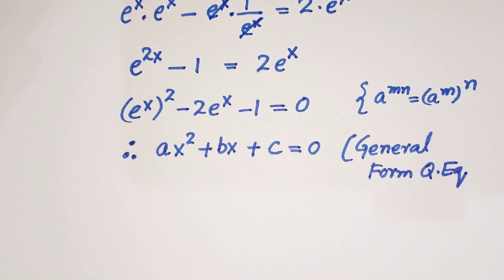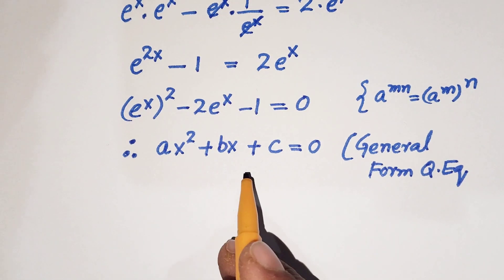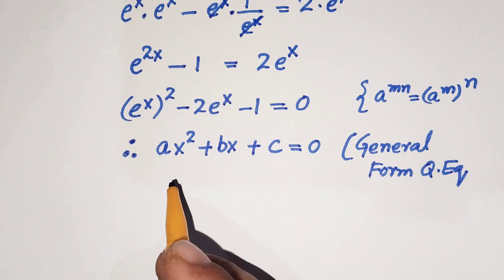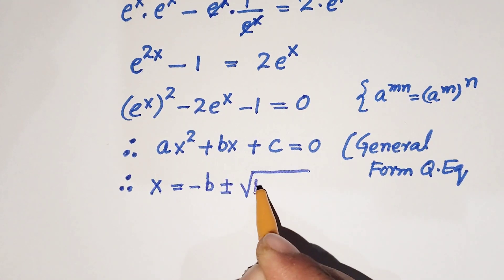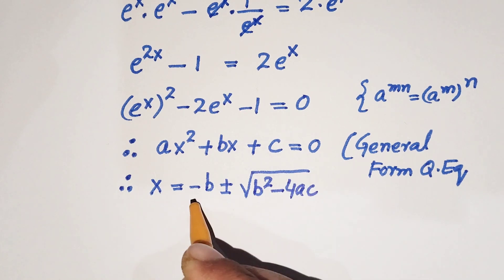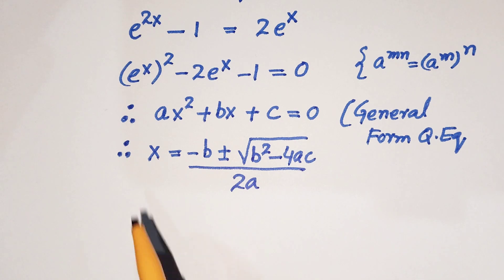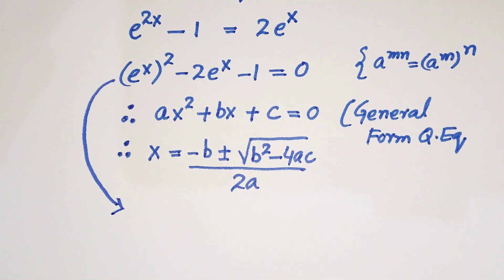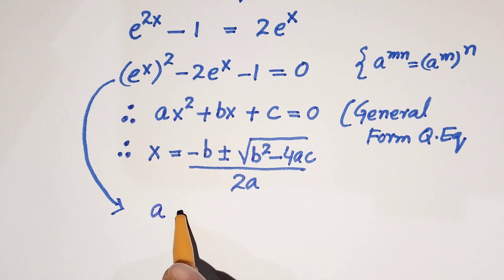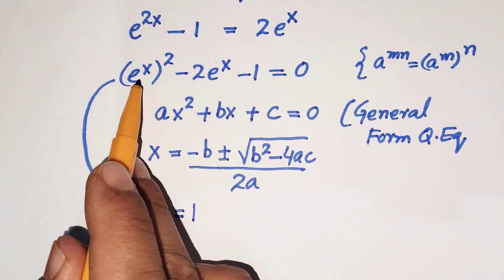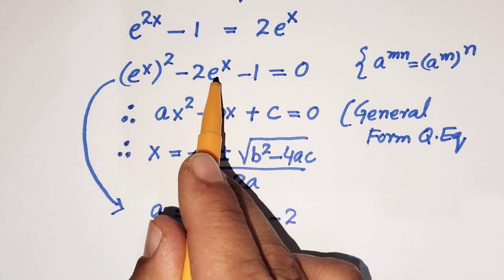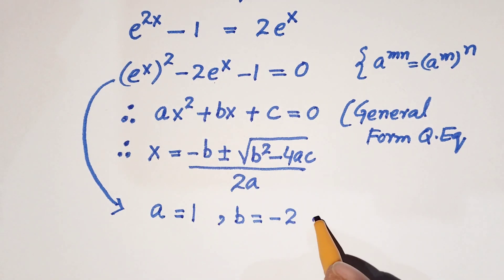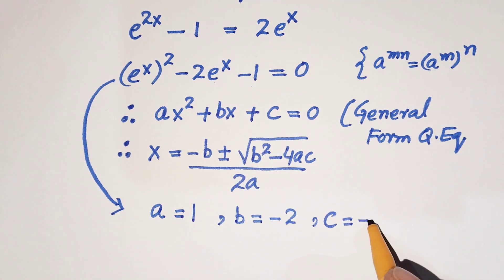We can see this is a quadratic equation. The general form of a quadratic equation is ax squared plus bx plus c equals 0. Using the quadratic formula, x equals minus b plus or minus square root of b squared minus 4ac, all over 2a. Here a equals 1, b equals minus 2, and c equals minus 1.